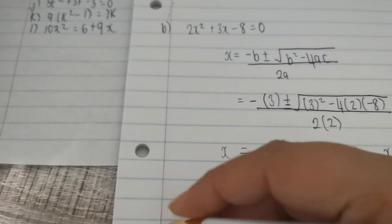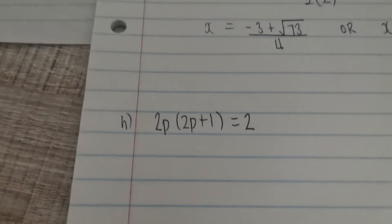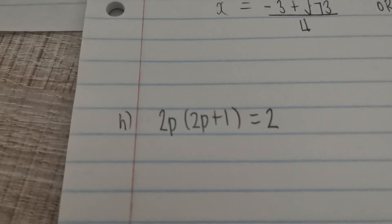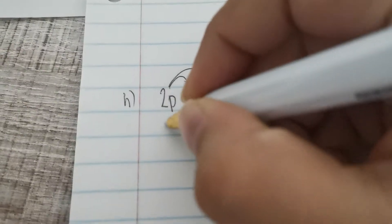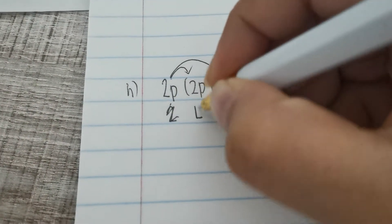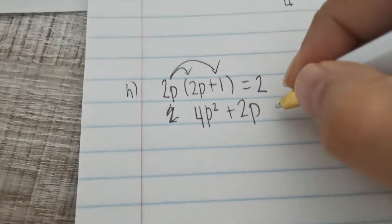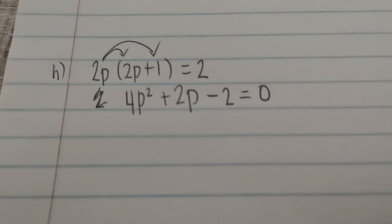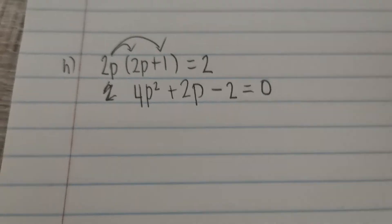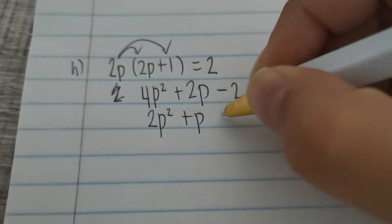I'm going to try H from my list over here. 2p(2p+1) equals 2. Is this in standard form? No, it's not. How do I know that? There's no p squared. So what I want to do first is get it to standard form. Multiply. 2p times 2p giving me 4p squared. 2p times 1 giving me 2p. And if I bring this over, that's going to give me minus 2 equals 0. You can leave it like this. Or if you wanted to, you can divide everything by 2. I'm going to do that because it's bothering me, but the 2 can go into all of them. So I'm going to say this is 2p squared plus p minus 1.